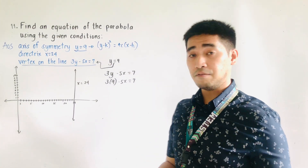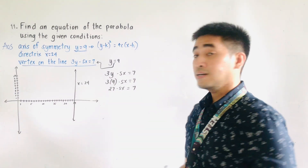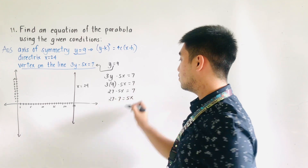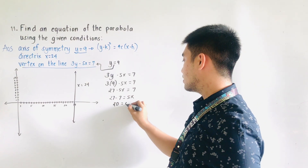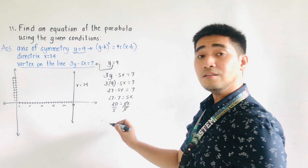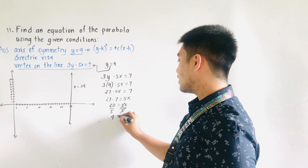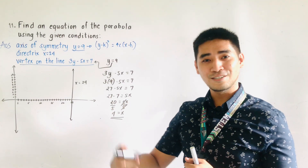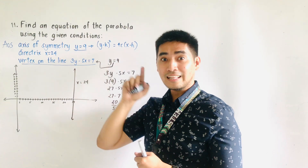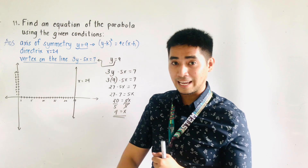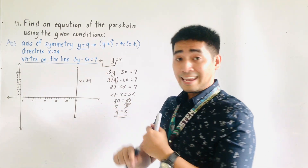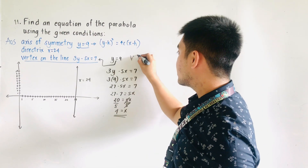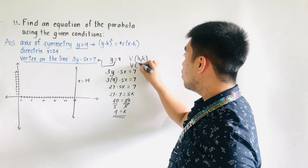3 times 9 is 27, so that becomes 27 minus 5x equals 7. Transposing, this becomes 27 minus 7 equals 5x. 27 minus 7 is 20, so 20 equals 5x. Dividing both sides by 5, x is equal to 4. Therefore this is the x-coordinate of the vertex. The y-coordinate of the vertex is 9. So our vertex h and k is (4, 9). If the axis of symmetry is given, that value is the x or y coordinate of the vertex; substitute it into the line to find the other coordinate, because the vertex lies on the axis of symmetry.